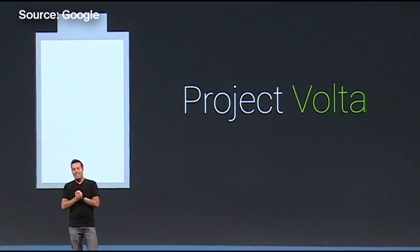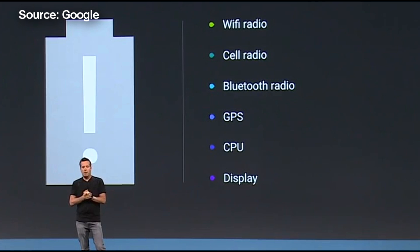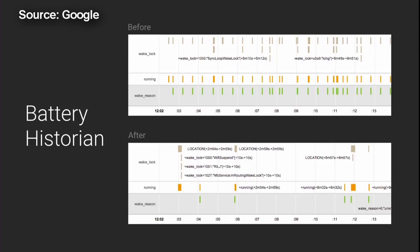We had Project Butter before for smoothness and fluidity, and now we have Project Volta — a proper initiative to help with battery consumption and saving power. It should dramatically decrease the consumption of one of the biggest battery killers on any mobile device, which is the radio. They included a battery historian to accurately see what's happening, and it's more efficient with wake locks and running times. The before and after graphs show a lot fewer wake locks, which should dramatically help with battery consumption.